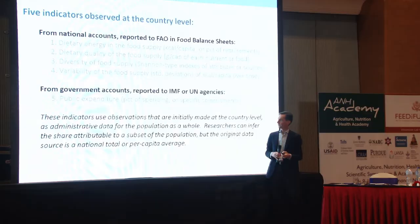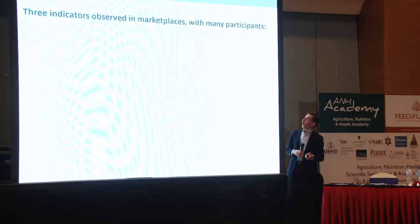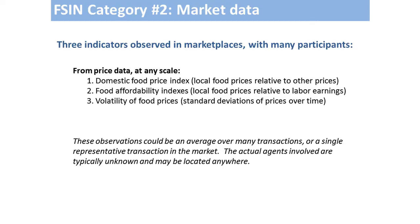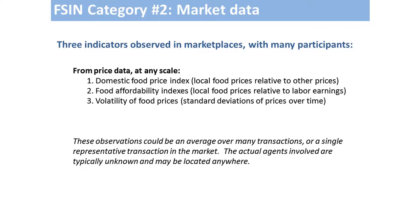These market level data are of great interest, even though you don't know who benefits or buys or sells. Survey data — category number three — is the most commonly used category. The most common, oldest, and still very useful metric of food insecurity is: what fraction of your total budget do you have to devote to food? The poorest people in the world spend about 80% of their income on food.